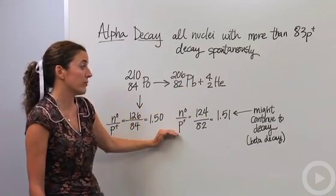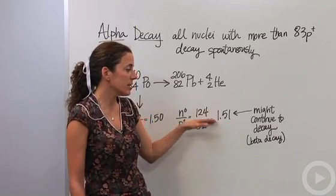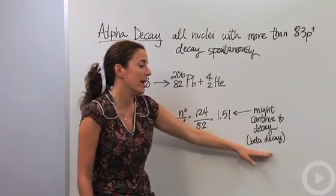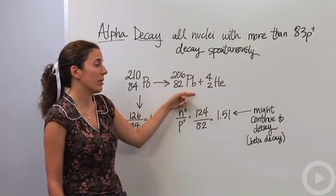Let's look at the neutron to proton ratio for lead. This is 1.51 - it might continue to decay. This actually is a little bit high, not crazy high, but a little bit high, so it might continue to decay. Because it's high, it might go into beta decay, but this might be stable enough to stay where it is.